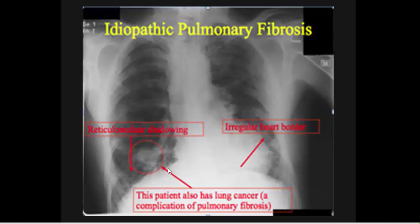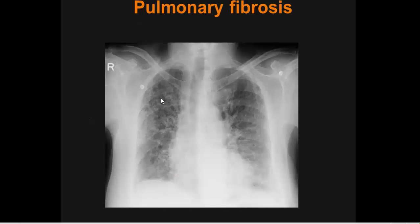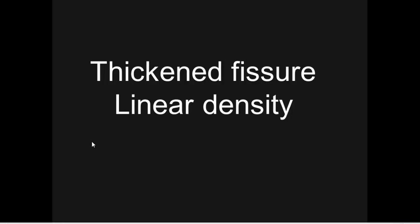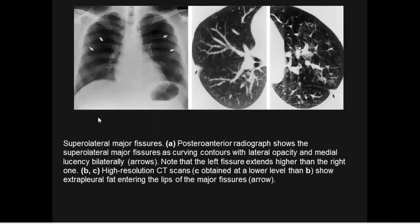Pulmonary fibrosis presents with reticulonodular shadowing. Radiation fibrosis produces linear markings and linear density. Pulmonary fibrosis is scattered bilaterally throughout both lungs. The transverse fissure presents as a linear density; the normal major fissure is visible on the right and on the left, including superior-lateral major fissures.